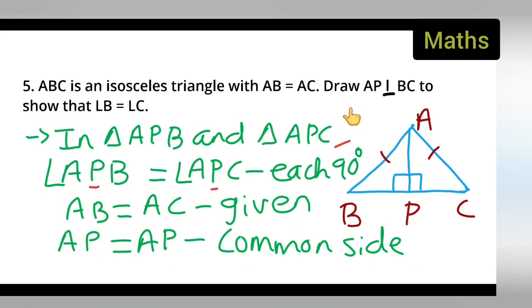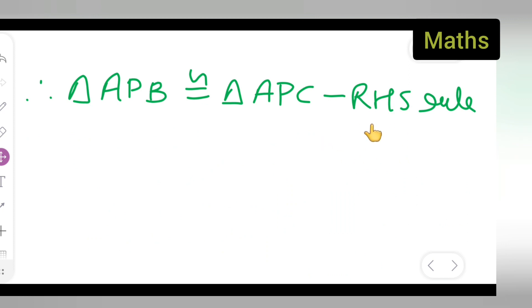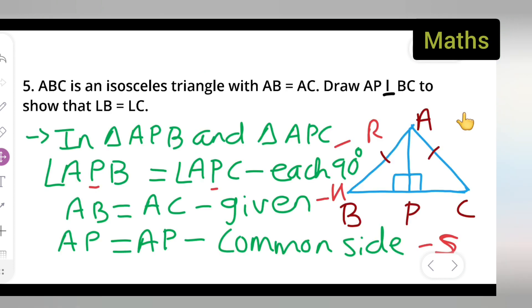First we have used R, that is 90 degrees. Secondly we have used side. And here we have used hypotenuse. Now this is your hypotenuse AB and AC, and this is your side. So by that RHS rule, we proved that these two triangles are congruent. We were supposed to prove that angle B is equal to angle C.